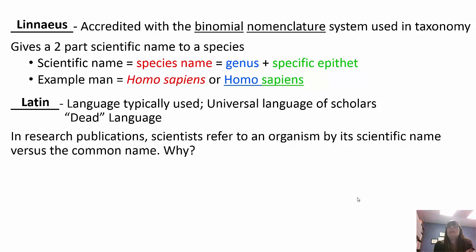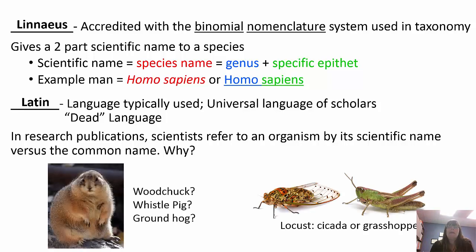Linnaeus is credited with the binomial nomenclature system — a two-part scientific name consisting of the genus and the specific epithet. For example, Homo sapiens: Homo is the genus, sapiens is the specific epithet. Latin is used because it's the universal language of scholars and is considered a dead language, so it's not changing. Binomial nomenclature is used to minimize confusion so that everybody knows what you're talking about — Homo sapiens is the same in the United States, Australia, and England. Common names can vary by country — a locust, for example, could be a cicada or a grasshopper in some countries — so we use Latin names to eliminate that confusion.